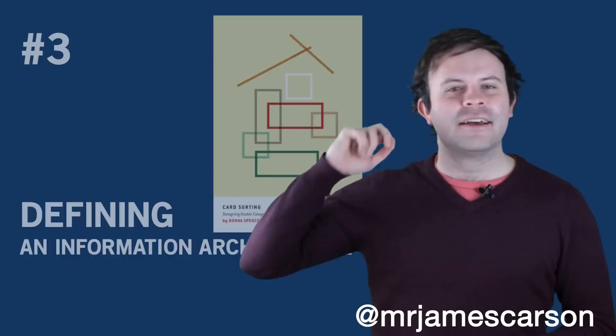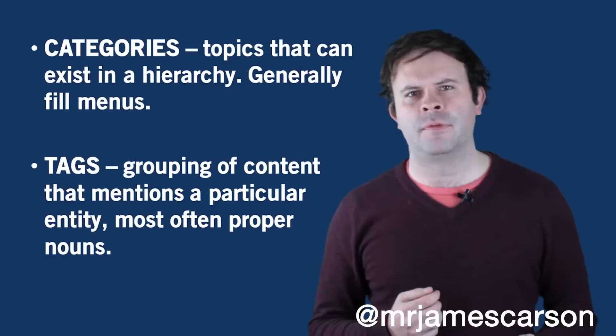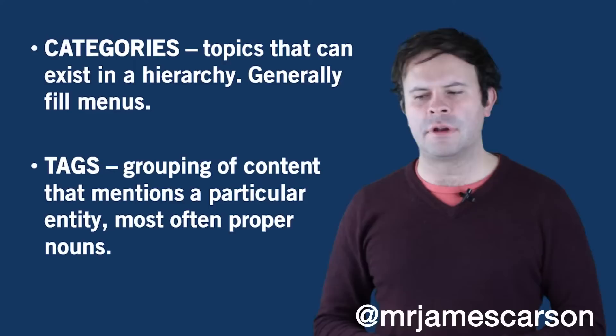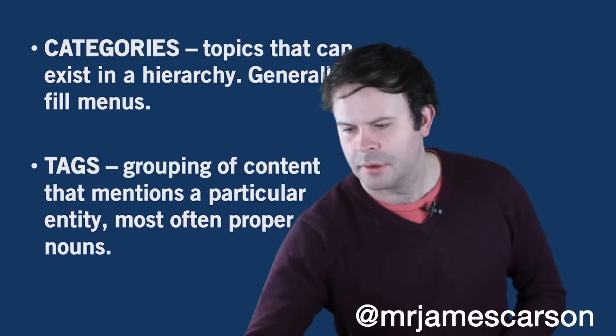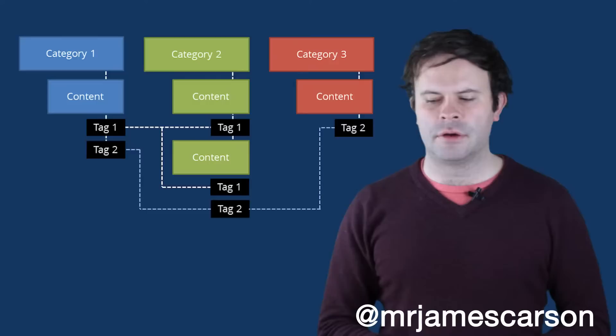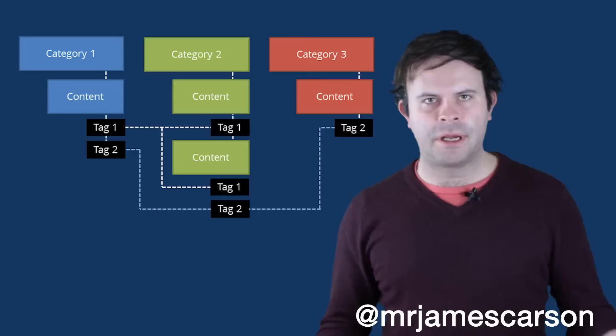It's important to define what categories and tags are, because many people go into blogging without a real plan around what they actually mean. Categories are topics that exist in a hierarchy and generally fill menus. Tags are a grouping of content that mentions a particular entity, most often proper nouns. You can navigate across categories from related content through a tag — for example, moving from a fashion category to a beauty category because an article is tagged Kate Middleton.